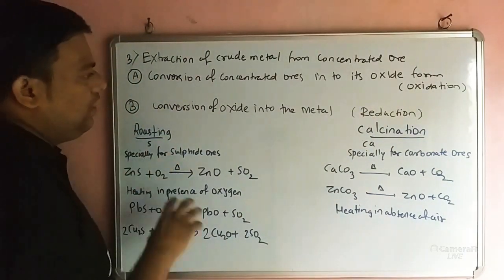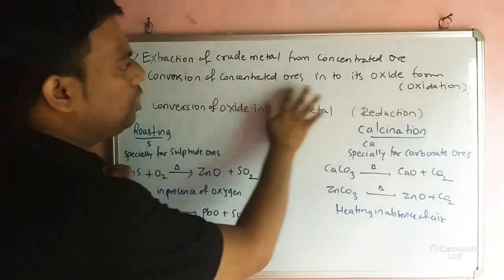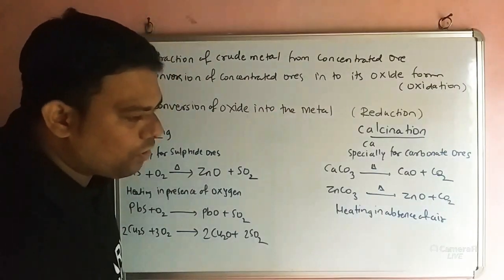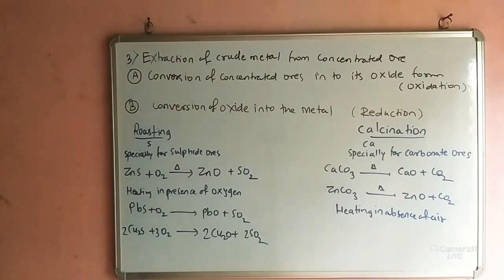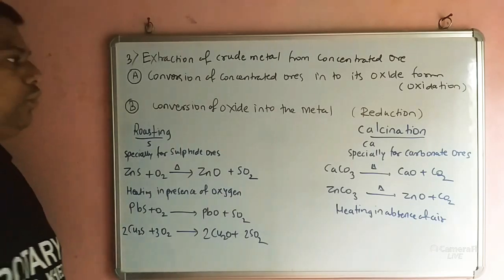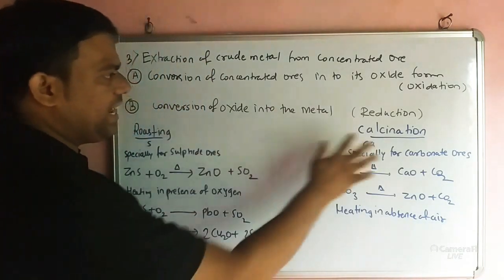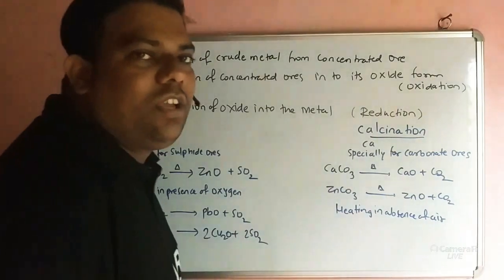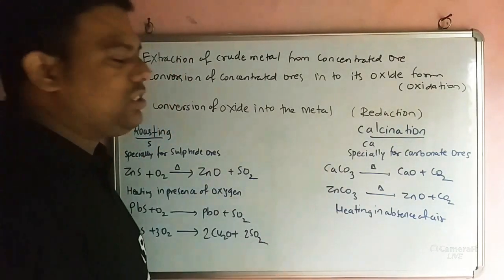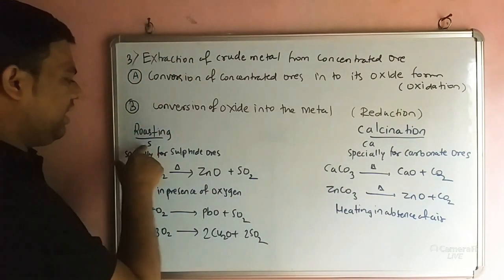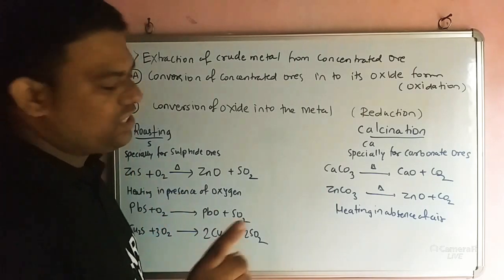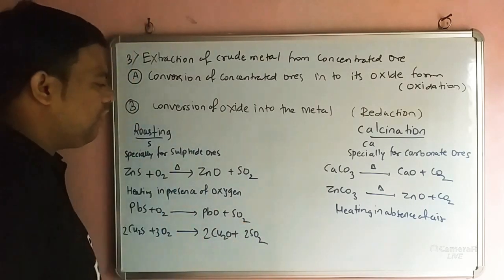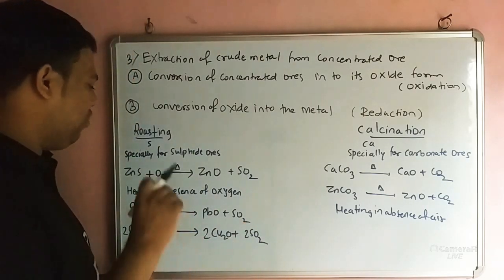For the conversion of concentrated ore into oxide form, we divide this into two main types: roasting and calcination. Roasting is specially for sulphide ores.